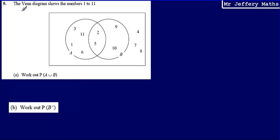This is question 9. Here we get told the Venn diagram shows the numbers 1 to 11, and we're asked to work out the probability of A union B. We can also think of this as being the probability of A or B.